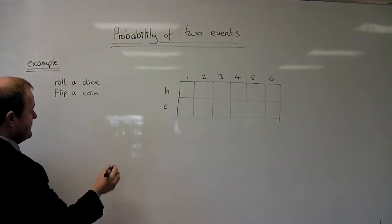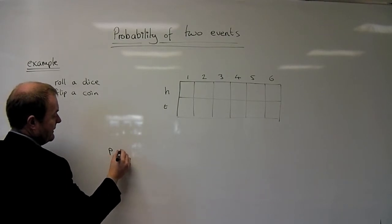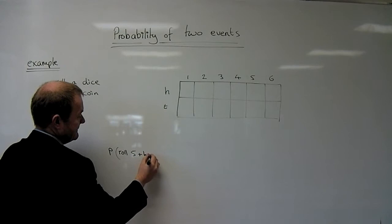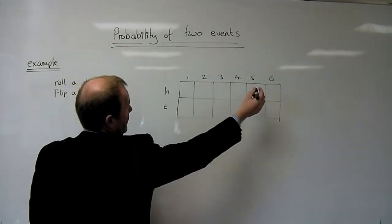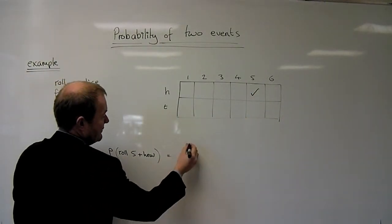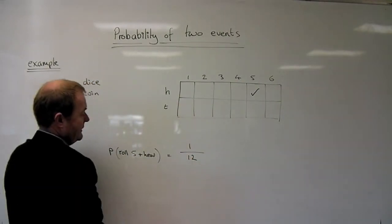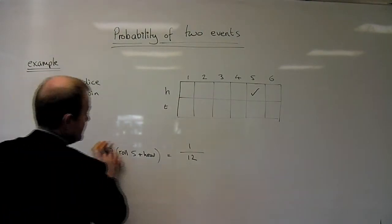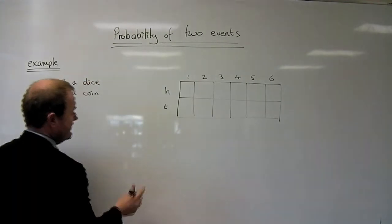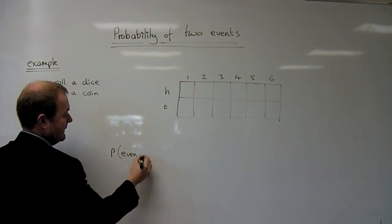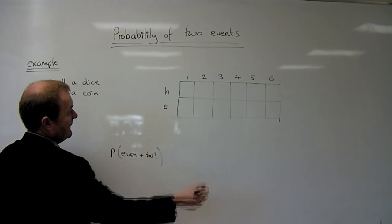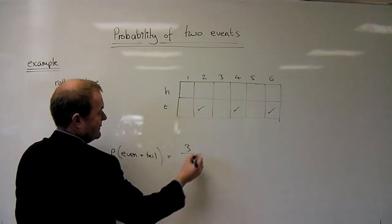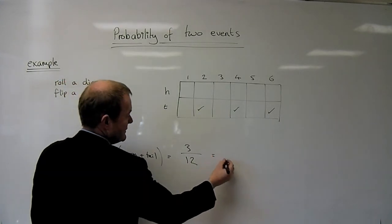Knowing there are twelve possible outcomes, if we ask: what's the probability of rolling a five and flipping a head? There's only one way to roll a five and flip a head, so the probability is one over twelve. If we want the probability of rolling an even number and a tail, that could be a two and a tail, a four and a tail, or a six and a tail — three ways — out of twelve total. Simplified to its lowest terms, that's one quarter.